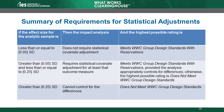If the effect size for the analytic sample is less than the absolute value of 0.05 standard deviations, then the analysis does not require a statistical covariate adjustment. The highest possible rating for a study in this situation is meets WWC group design standards with reservations.